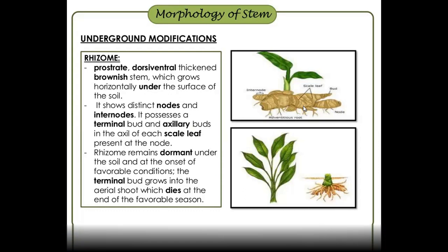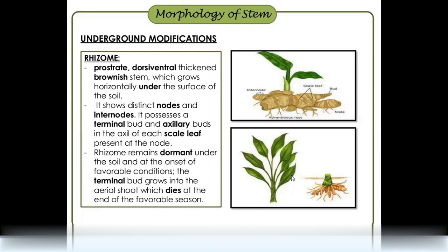Rhizome is actually dormant. In favorable conditions, the terminal bud can grow. If it grows in an area, it will enable vegetative propagation. The ginger is not growing above ground normally.